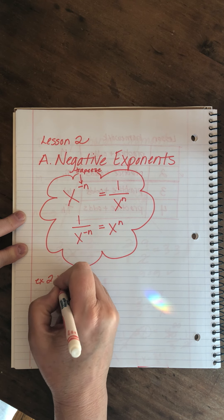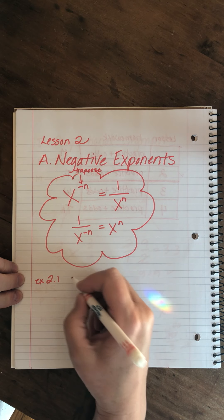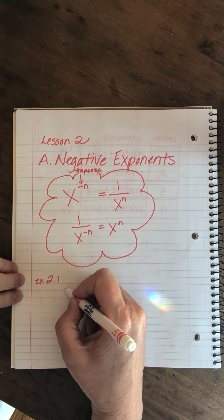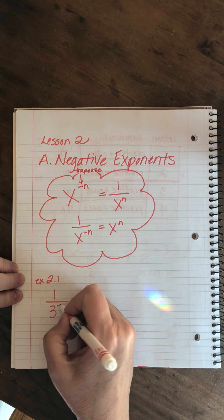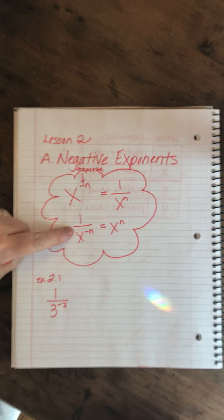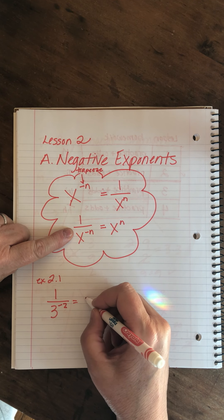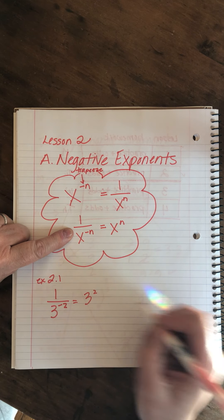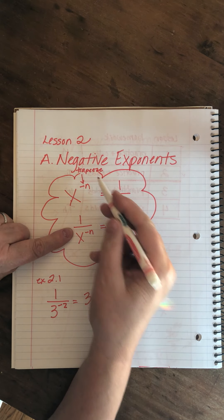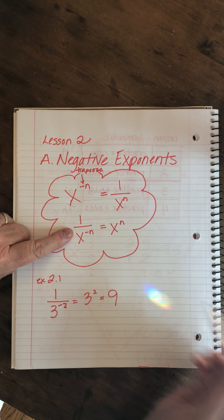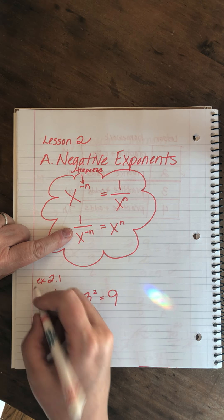Let's do some examples. There are four parts to this one — we're simplifying. The first one is 1 over 3 to the minus 2. We flip it up from the denominator to the numerator, so that becomes 3 squared, which equals 9. Notice that when I make the flip the minus sign goes away — it does not exist anymore.